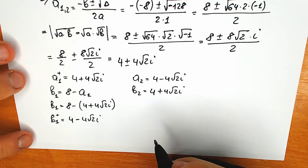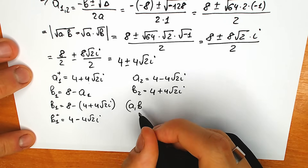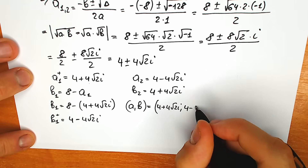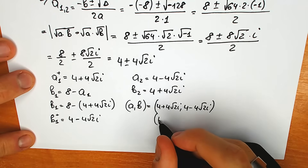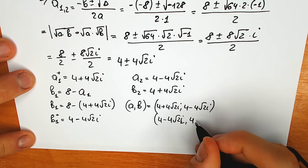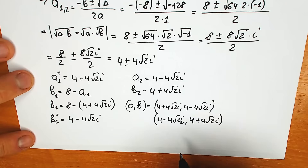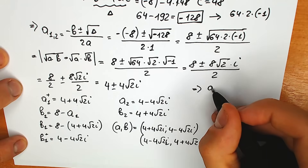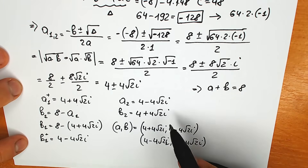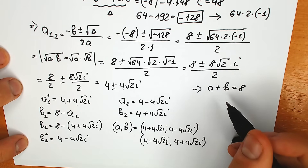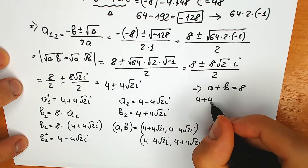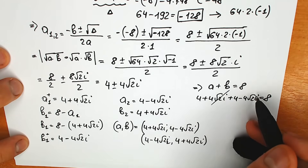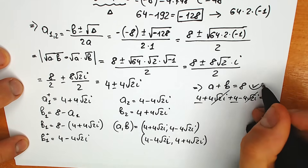Let's write both pairs. First pair: a = 4 + 4√2·i and b = 4 − 4√2·i. Second pair: a = 4 − 4√2·i and b = 4 + 4√2·i. Now let's check. For a plus b, using the first pair: (4 + 4√2·i) + (4 − 4√2·i). We can cancel the imaginary parts, and 4 plus 4 equals 8. Addition checks out perfectly.